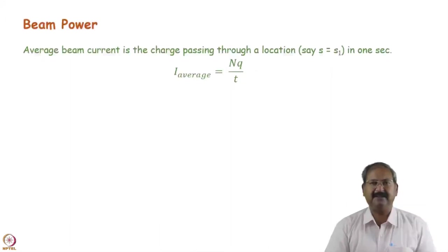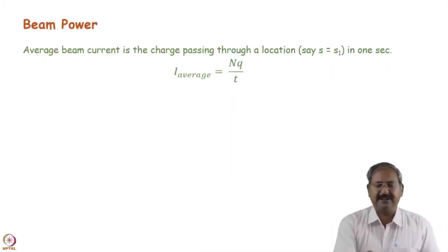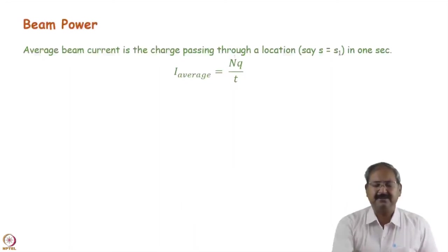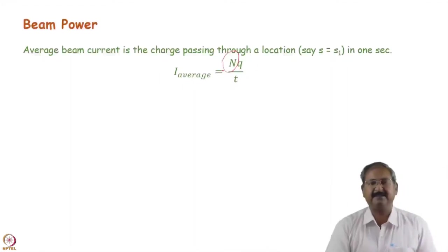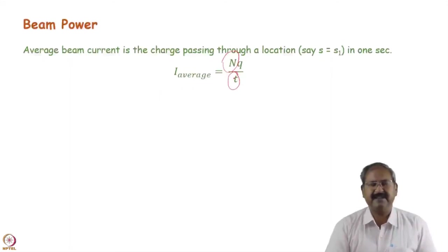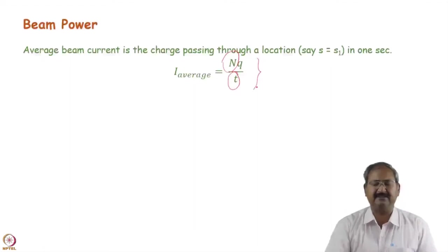How can this high beam power be achieved and what is beam power actually? If charged particles are passing through a point it constitutes a current. Suppose n number of charged particles pass in time t, then I_average equals nq/t. This is known as the average beam current of an accelerator — how much charge has passed through a point in one second, similar to the electrical current definition.